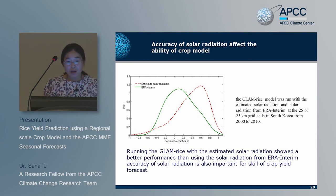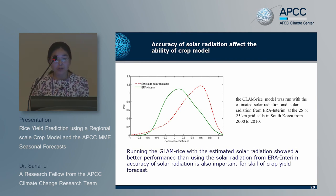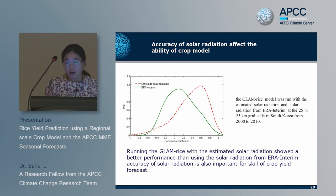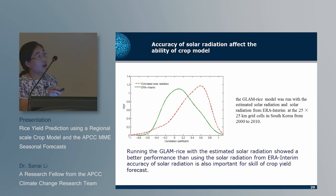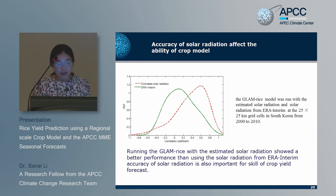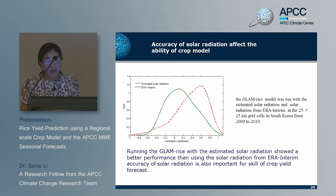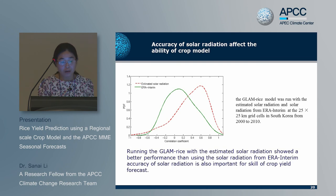To assess how the accuracy of solar radiation affects the performance of the crop model, the GLAM Rice model was run with estimated solar radiation and solar radiation from in-situ measurements. The GLAM Rice model with estimated solar radiation showed better performance than using solar radiation from in-situ measurements. This indicates that the accuracy of solar radiation is very important for the performance of the crop model.